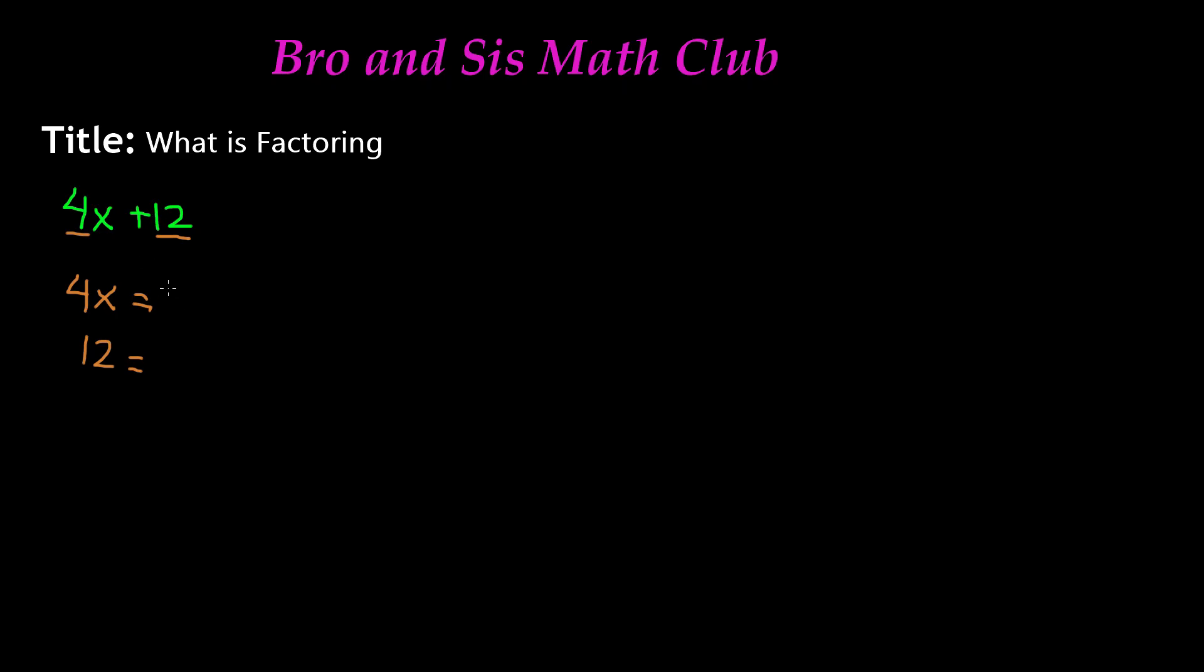So 4x is the same thing as multiplying 4 by x, and 12 is the same thing as multiplying 4 by 3. So as you can see, the factor of 4 and 12—4, this is a common factor. If I multiply it, I can get 4x and I can get 12. So here's where you need to apply common sense, but it's really simple once you've practiced this.